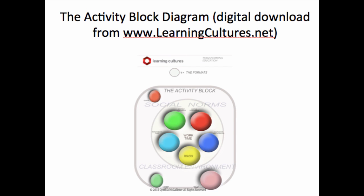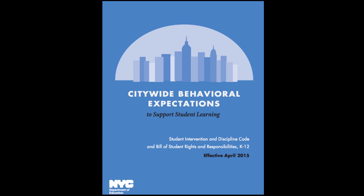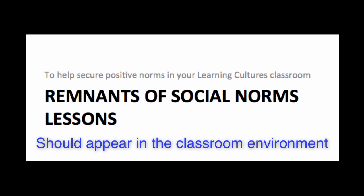In addition to the rubrics and the activity block and format structures, we also teach the social contract — essentially the school or district discipline code and behavior expectations. It comes with an overview of the historical context of education and human rights. The social contract is a really important document referred to frequently throughout the year, and there's a whole system called Keepers of the Culture that's part of another course. Once these have been taught, the environment should have remnants of this instruction, and these artifacts should be used and referred to frequently by teachers and peers to secure norms in the classroom culture.